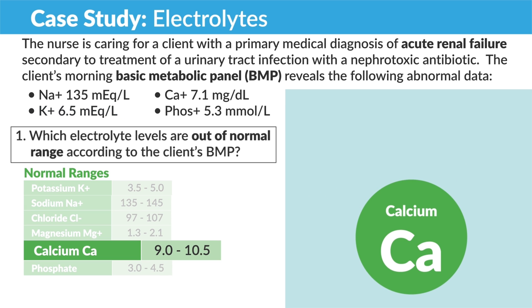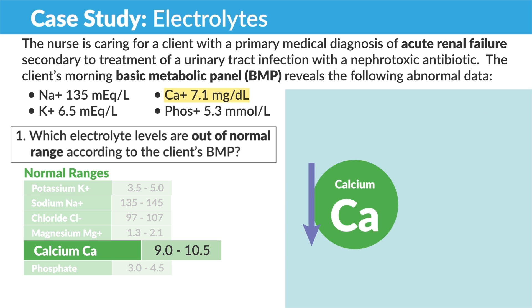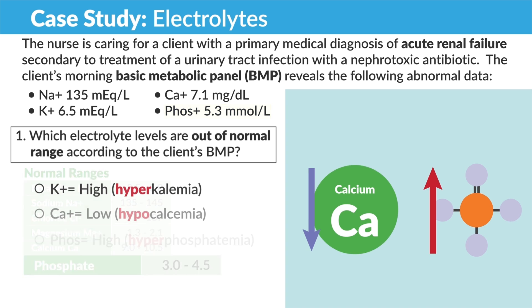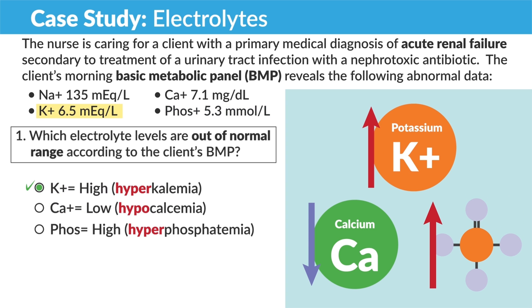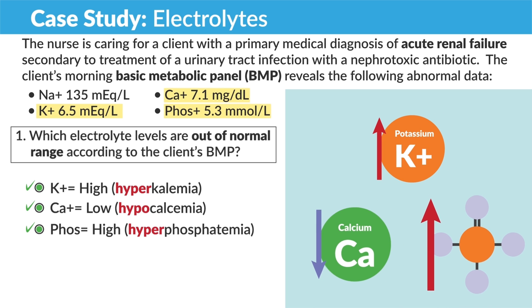Calcium, Ca+, is normally between 9.0 and 10.5, so we have 7.1 here — that is pretty low. And we know when calcium is low, phosphate will be high since they work inversely. So phosphate is 5.3, which is high, as expected, because normally it's 3.5 to 4.5. So the correct answer is potassium that is high — hyperkalemia — calcium that is low — hypocalcemia — and phosphate is high — hyperphosphatemia.